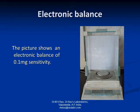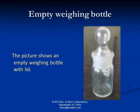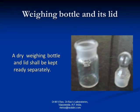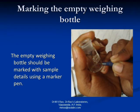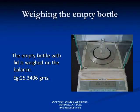This is a digital balance of 0.1 milligram sensitivity which is used for testing moisture. This picture shows an empty weighing bottle with lid, which is ideal for moisture test. The lid prevents reabsorption of moisture from the atmosphere after drying the sample. The weighing bottle and lid should be perfectly dry and kept ready separately. The empty weighing bottle should be marked with sample details using a marker pen. The empty bottle with lid is weighed on the balance — in this case, the weight is 25.3406 grams.